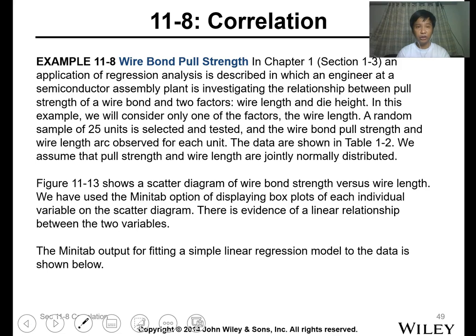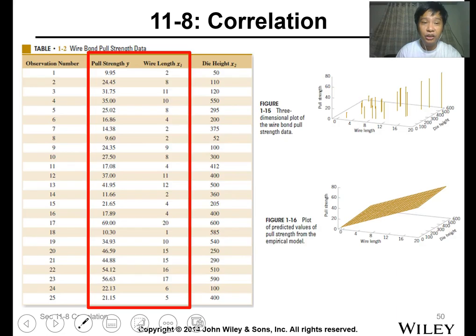So this is an example for the test of correlation. We have the regression analysis described in which an engineer at a semiconductor assembly plant is investigating the relationship between the pull strength of a wire bond and two factors, the wire length and the die height. In this example, we will consider only one factor, the wire length. A random sample of 25 units is selected. So just check this data, example 11-8.